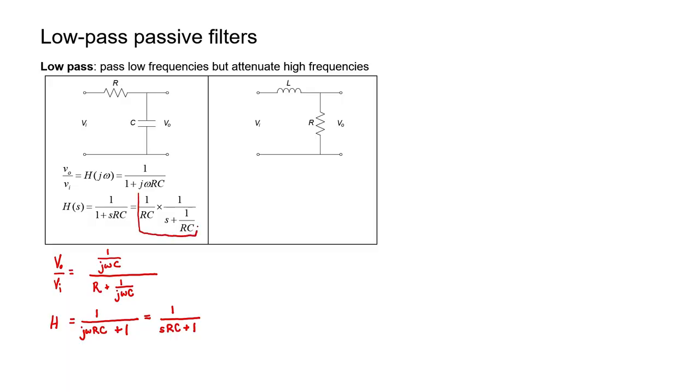We're not going to talk about these transforms in this particular video. Just keep in mind that sometimes j omega can be written with an s. If we divide everything in this fraction by rc then we'll wind up with a useful form for this expression. I'll show you later what I mean.